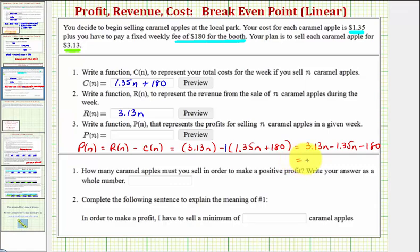So combining like terms, our profit function is 1.78n minus 180. So again, 1.78n minus 180 is our profit function, P(n).